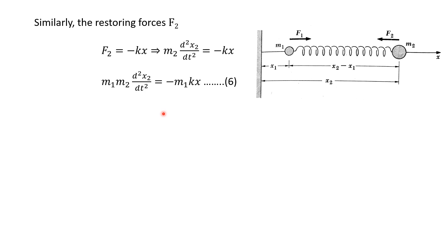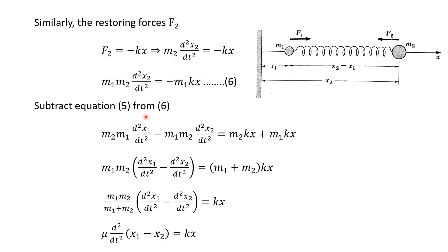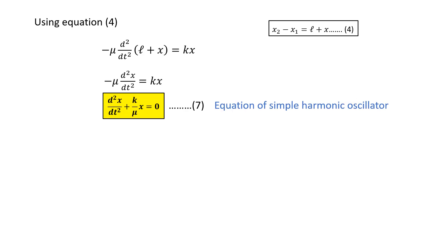Similarly we apply the same treatment for restoring force f2, the only difference being the negative sign since it is directed toward the left. Subtracting equation five from equation six, we get a relation, and after further simplification we arrive at an equation where m1·m2 divided by m1+m2 represents the reduced mass, represented by mu. From equation four, x2 minus x1 equals l plus x, so substituting and differentiating — since l is constant it goes to zero — we are left with the equation for a simple harmonic oscillator.